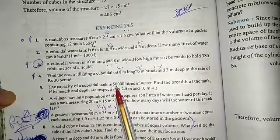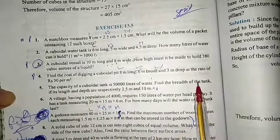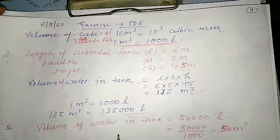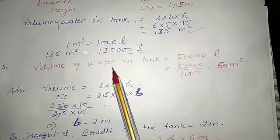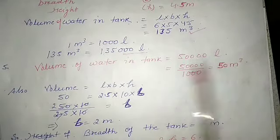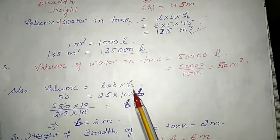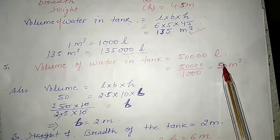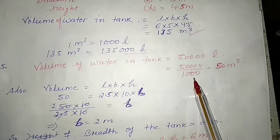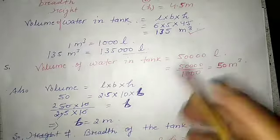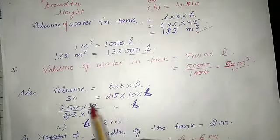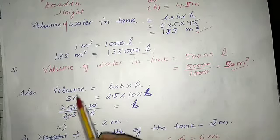The next question: the capacity of a cuboidal tank is 50,000 liters of water. Find the breadth if its length and depth are 2.5 m and 10 m respectively. The volume is given as 50,000 liters. We first convert to meter cube by dividing by 1000, giving us 50 meter cube. The formula is l × b × h, so 50 = 2.5 × b × 10.